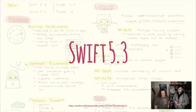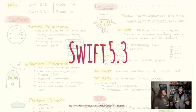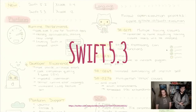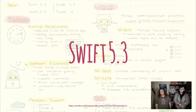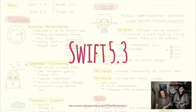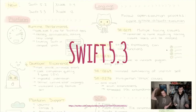Swift 5.3 is the current version. It was released in September and is probably the last major update before Swift 6. Swift 5.3 is a very good, powerful language available for Windows, Linux, macOS, and possibly other platforms as well. You can go download it at swift.org.